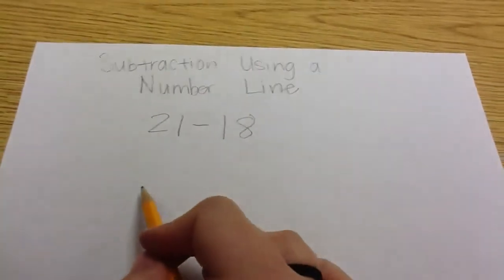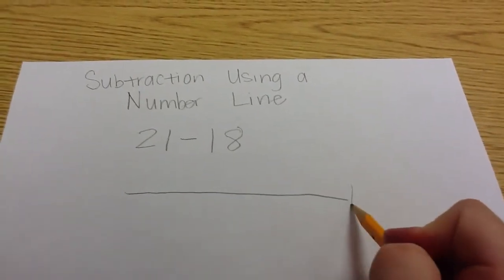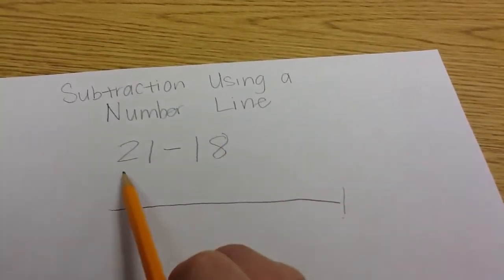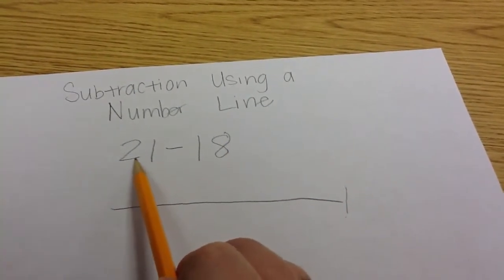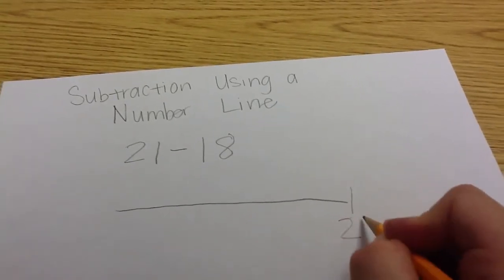Okay, we're going to draw our number line. Now, the most we are going to put on our number line is going to correlate to the largest number. This is 21, so we're going to end our number line with 21.